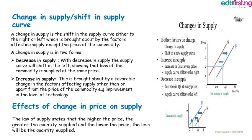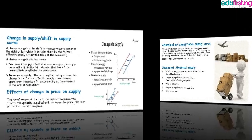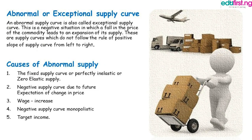Effects of changing price on supply: as the law of supply states, the higher the price the greater the quantity supplied, and the lower the price the less will be the quantity supplied. So any change in price upward will result in an upward movement of the quantity supplied.